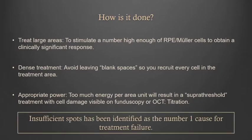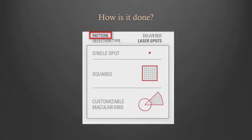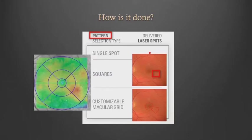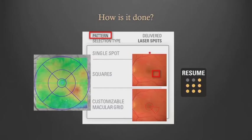Remember that insufficient spots have been identified as the number one cause for treatment failure. At 160 microns diameter, which is what we use with subliminal, you need 100 spots just to fill one optic nerve space, so you need a lot of them to cover larger areas. The subliminal device comes equipped with features to help attain these two targets. First is the pattern — whether square or macular grid — which envelops with laser the area you intend to treat. Then there's the rezone function: if you have to stop treatment for any reason, you put the pattern back in place and treatment restarts right where you left it, making sure you do not leave any blank spaces.